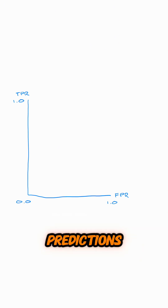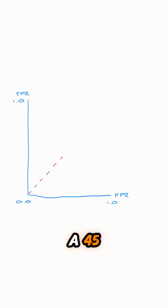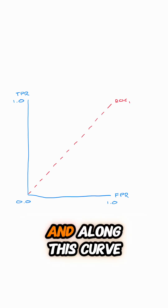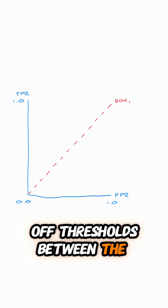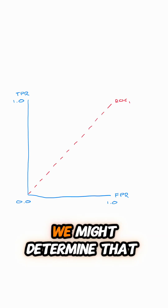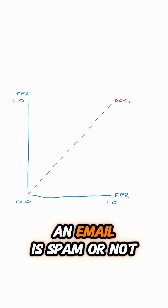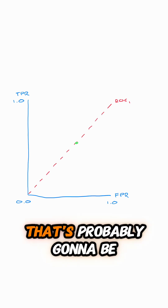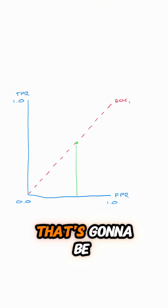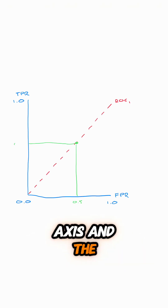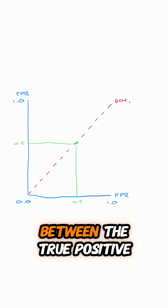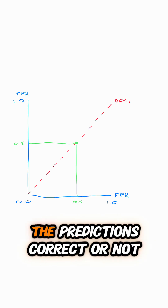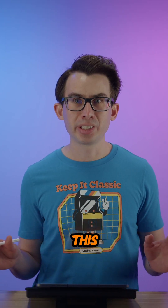We can draw a curve representing the predictions made by a model. I'm going to draw a curve here at a 45-degree line — I'll call this ROC1, representing the predictions of one of our models. Along this curve are all of the cutoff thresholds between the classes. In our email spam example, we might set the probability cutoff at 0.5, which gives 0.5 on both axes. However, this model is not very good — it's literally a 50-50 chance as to whether the prediction is correct.